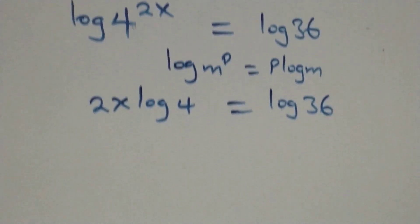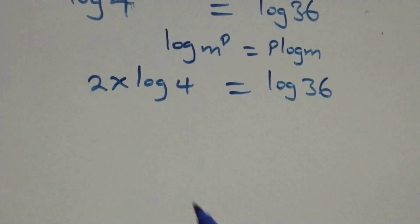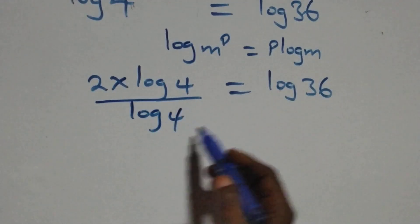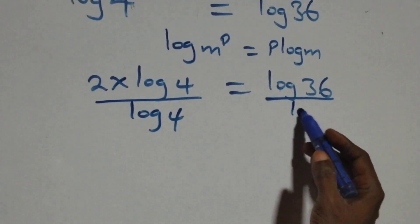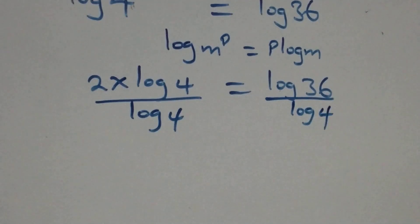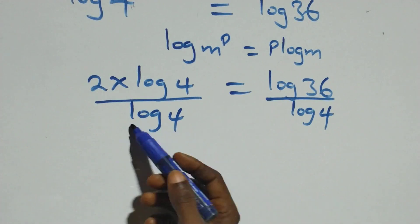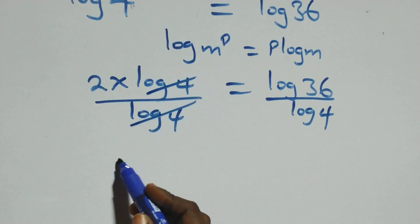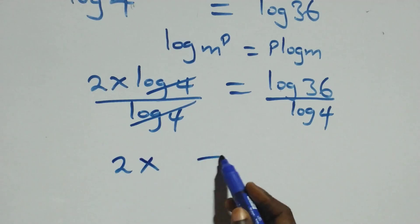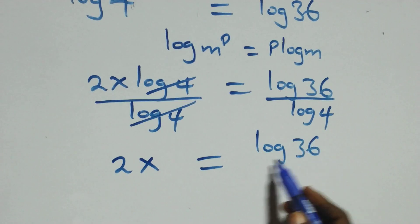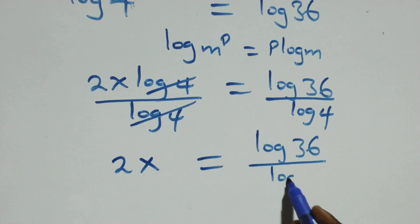The next step here, we divide both sides by log 4. That is, divide this side by log 4, and also divide this side by log 4. Log 4 cancels each other. We have 2x left here, which is equal to log 36 over log 4.